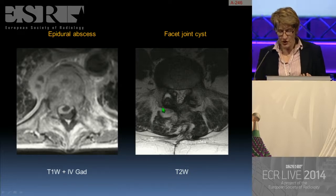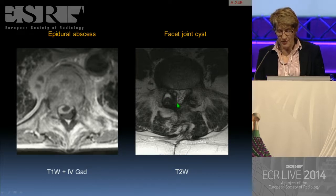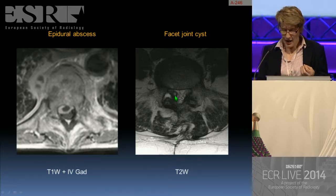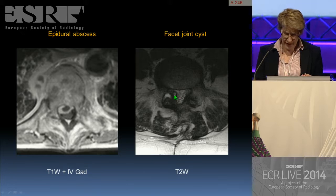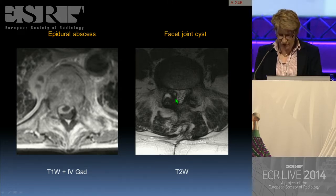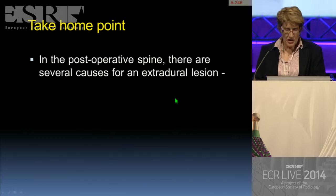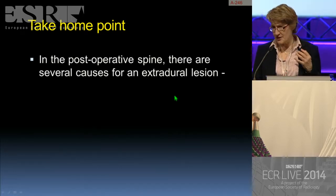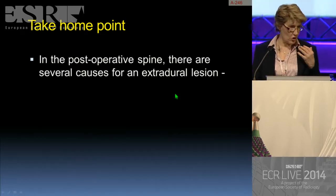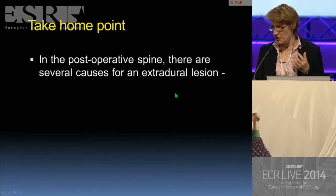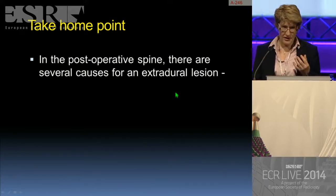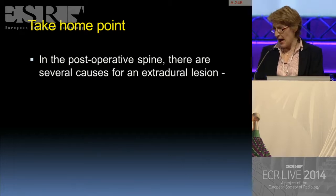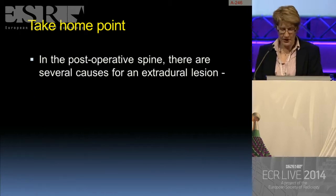The facet joint cyst: in this example we've clearly got facet joint hypertrophy, some hypertrophy of the ligamentum flavum, and on the T2-weighted sequence a small cystic focus projecting into the spinal canal, associated with often excruciating sciatica. In the post-operative spine there are several causes for an extradural lesion — not always post-operative epidural fibrosis, not always just a recurrent disc herniation. Consider those in conjunction with the clinical presentation.